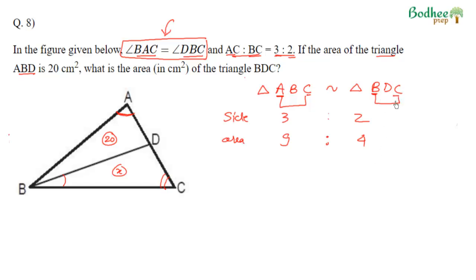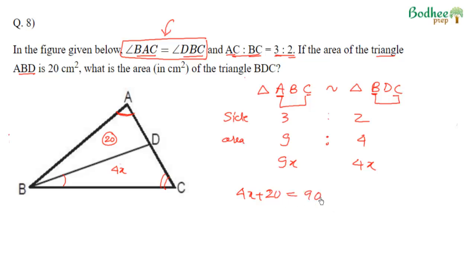Let area of BDC = 4X, then total area of ABC = 9X. The triangle ABC is divided into triangle ABD (area 20) and triangle BDC (area 4X). So 4X + 20 = 9X, giving 5X = 20, X = 4. Area of BDC = 4X = 16. So the answer is 16.